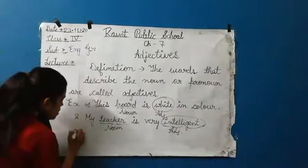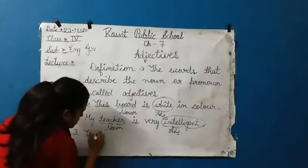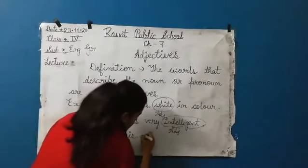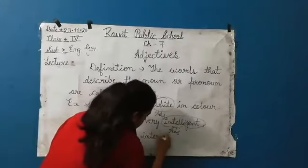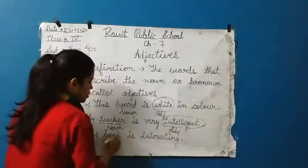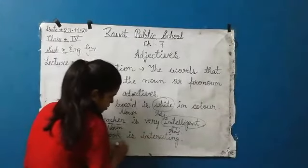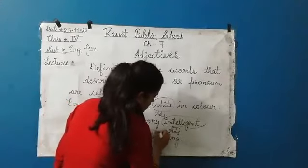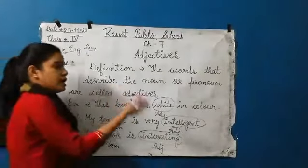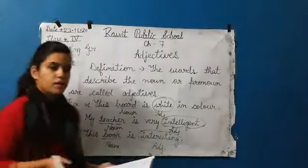Third example: This book is interesting. Here 'book' is the noun. This noun is described as 'interesting,' so 'interesting' is an adjective. The words that describe nouns and pronouns are adjectives.